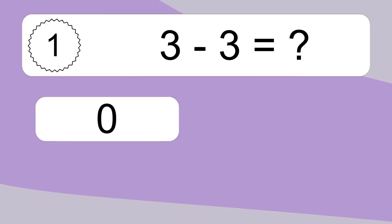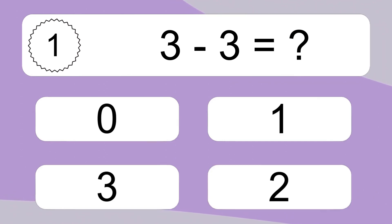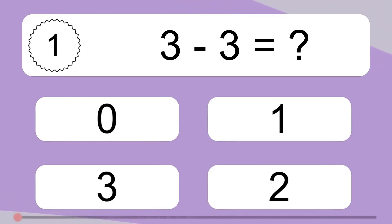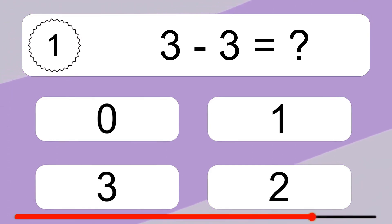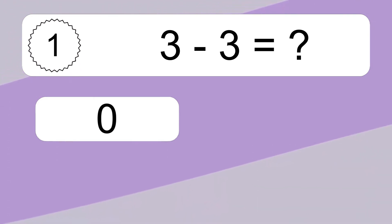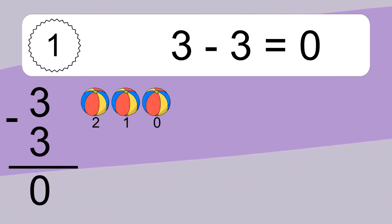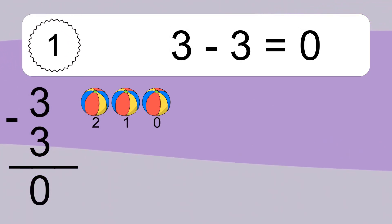3 minus 3 equals what? 3 minus 3 equals 0. Let's count it: 2, 1, 0.